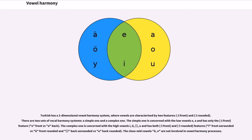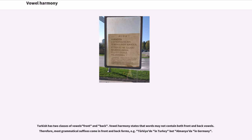Turkic has a two-dimensional vowel harmony system where vowels are characterized by two features: plus or minus front, and plus or minus rounded. There are two sets of vowel harmony systems. The simple one is concerned with the low vowels E and A and has only the plus or minus front feature. The complex one is concerned with the high vowels I, U-diaeresis, and U, and has both plus or minus front and plus or minus rounded features. The close mid vowels O and Ö are not involved in vowel harmony processes. Turkish has two classes of vowels — front and back — and vowel harmony states that words may not contain both, so most grammatical suffixes come in front and back forms.